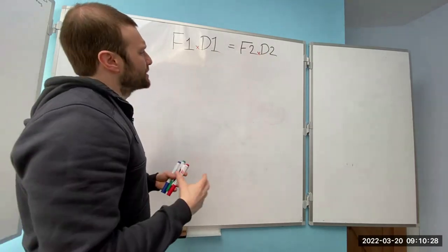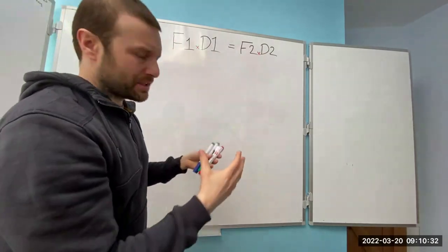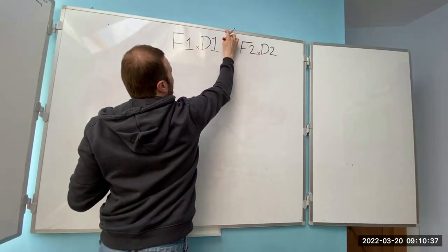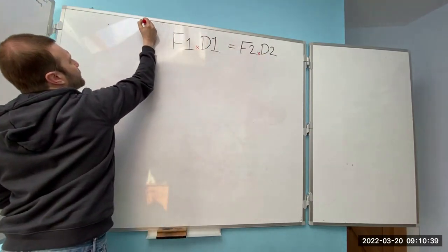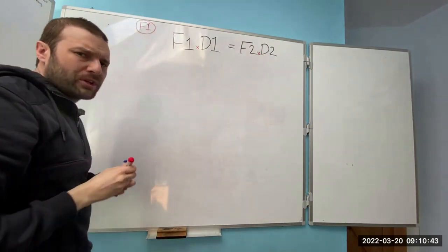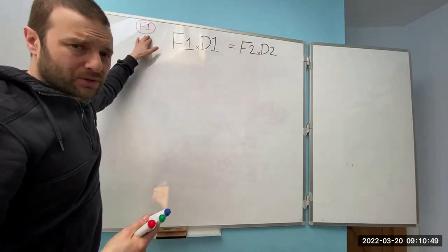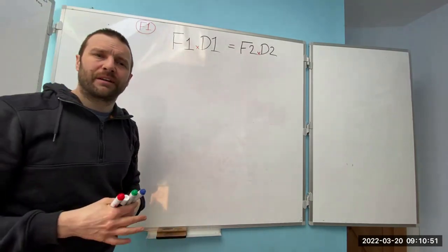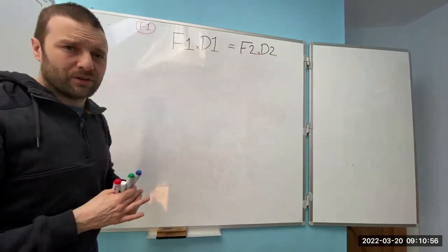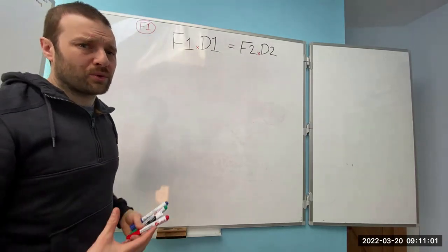What we need to do is get one of these by themselves. So let's choose Force 1 to start with. What I want you to do is whatever you're trying to find, put it into a circle or a box so that you don't lose track of it. As you go through and start to get confused, you can refer back to what we're looking for. So we're looking for Force 1 — that's the unknown quantity.